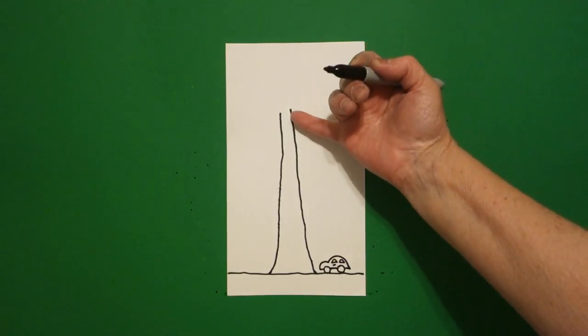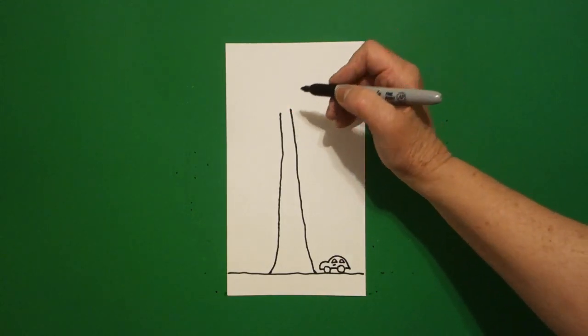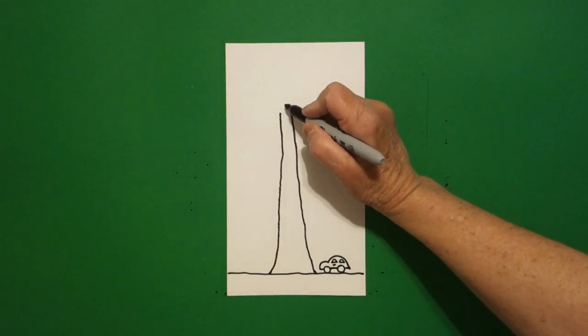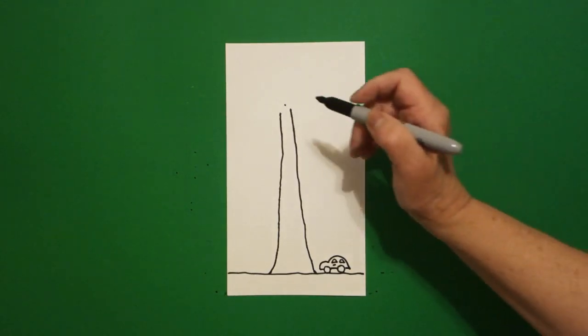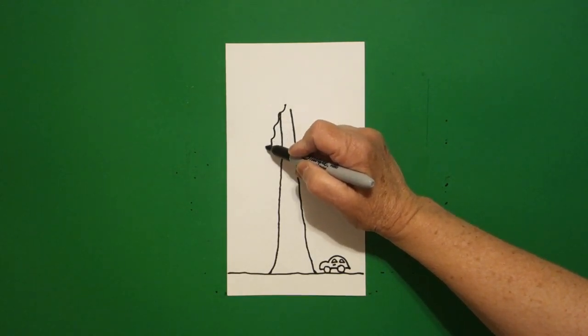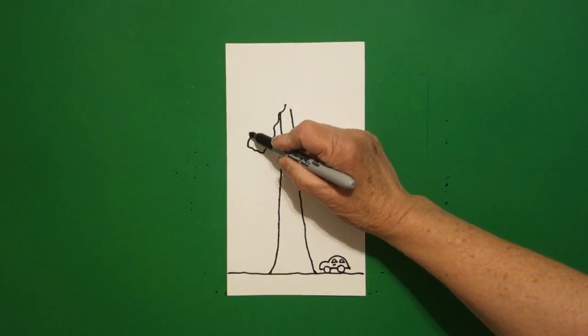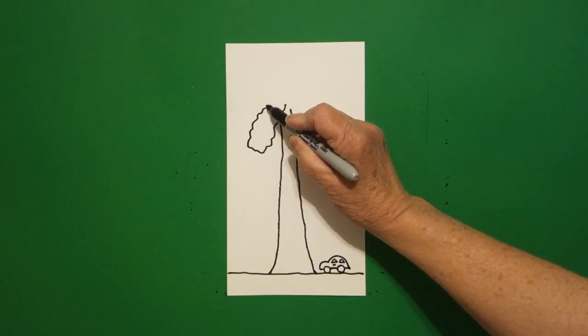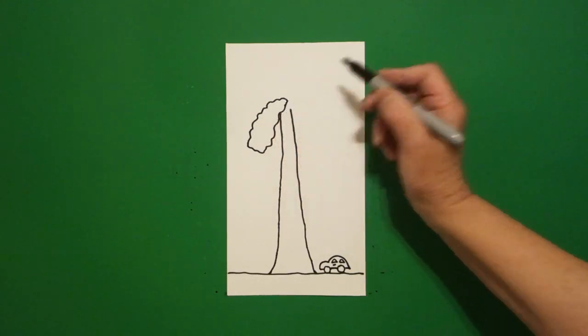Now come back over here to the very top and in between these two I'm going to put a dot. Now I'm going to draw a curve line down, out, curve line up, connect.